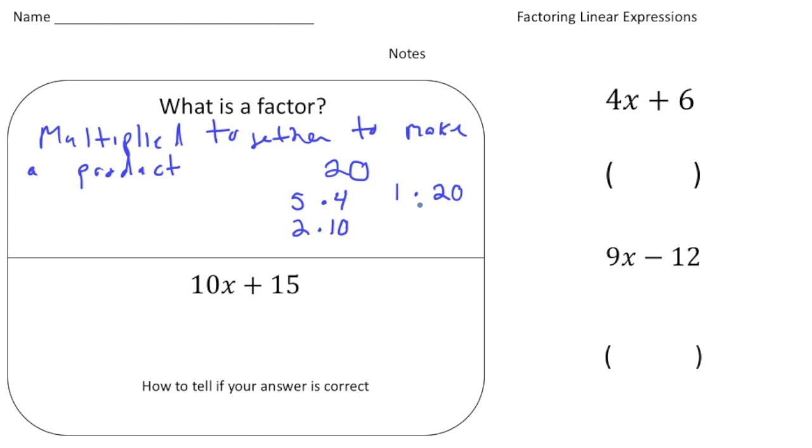Alright, so what we're going to do now is we're going to move on to factoring a linear expression. Now 10x plus 15, that's a linear expression. And the way you do this is you first look at the coefficients, right? The 10 and the 15. And you say, what's the greatest common factor or the GCF of 10 and 15? So that answer is going to be 5. So 5 is the greatest common factor.